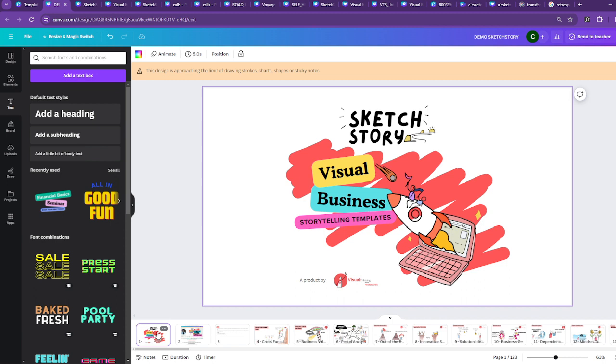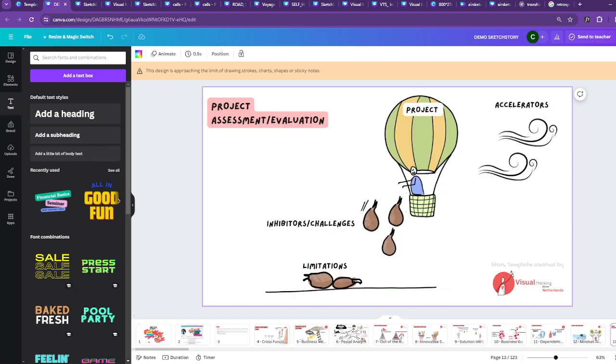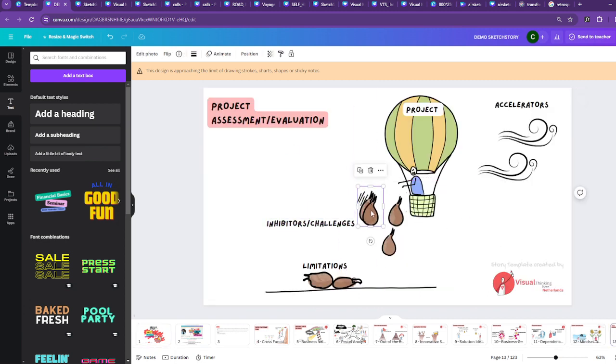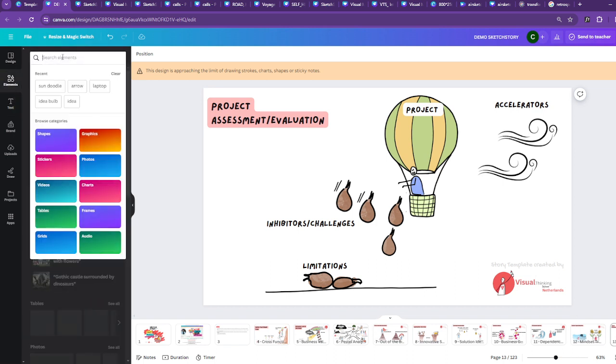It involves all scrum and agile use cases. We were using the project assessment here. You can increase the inhibitors or challenges, or you can increase the accelerators, or decrease the accelerators. I can change the text and everything.